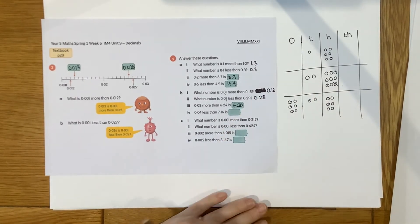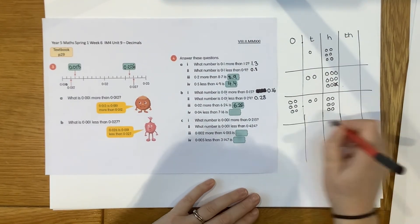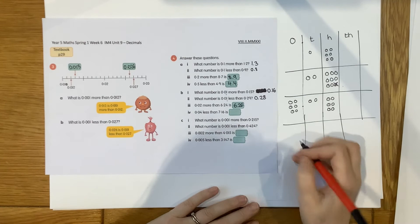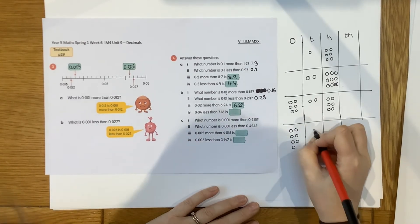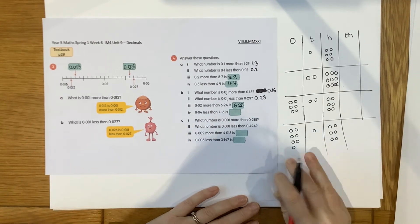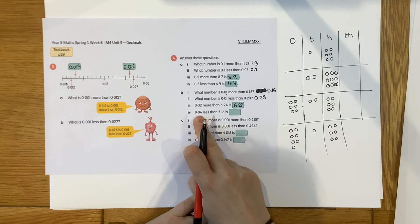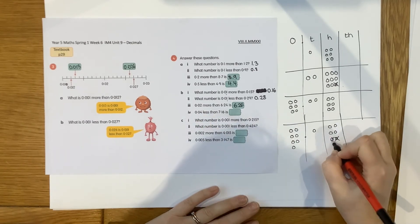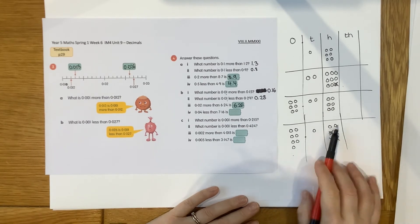And then last one. 0.04 less than 7.16. So let's build 7.16 first. 7 whole ones. 1 tenths and 6 hundredths. And we want 4 hundredths less. So I'm just going to cross out 4 of those hundredths. And that leaves us with 7.12.